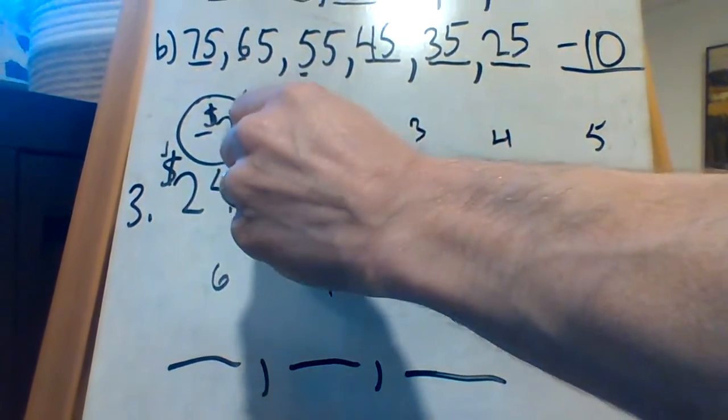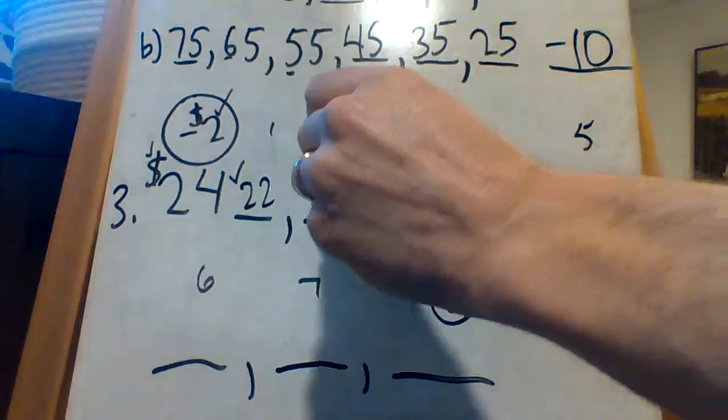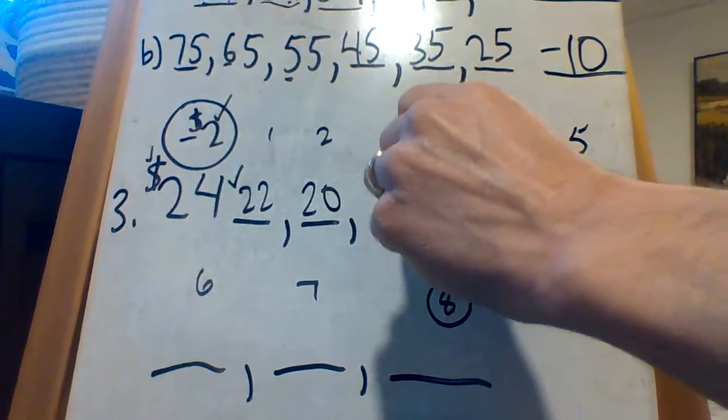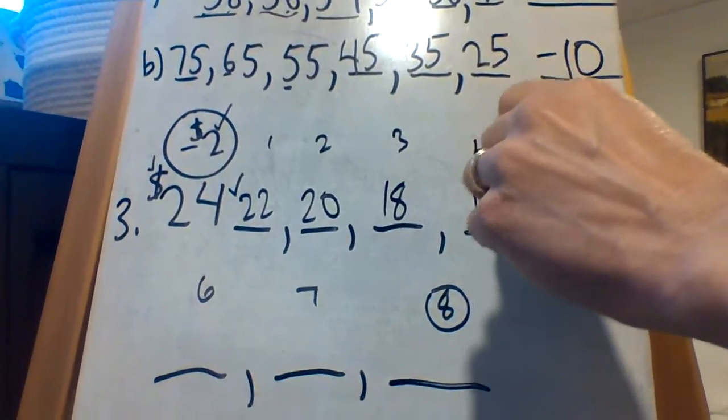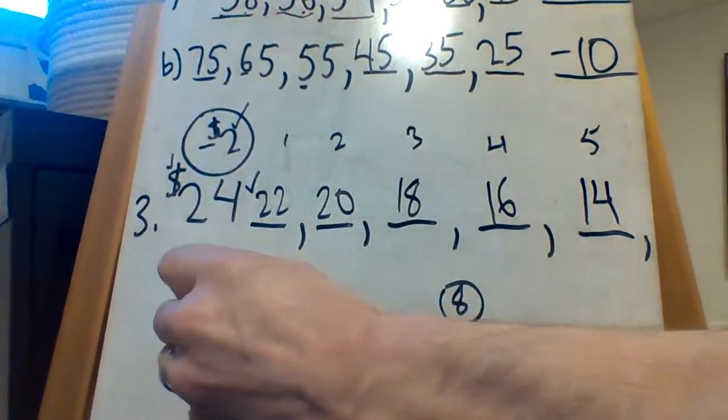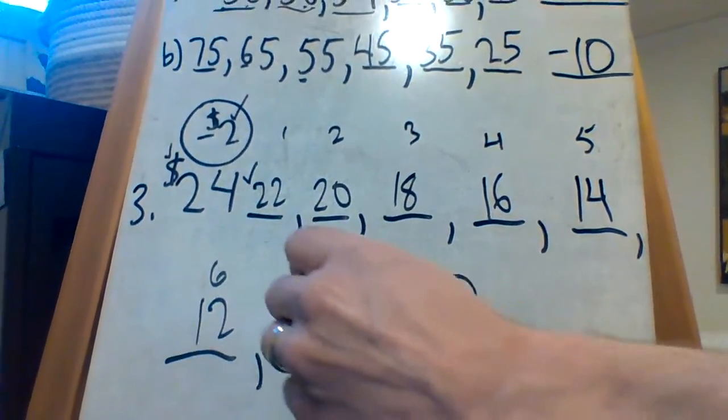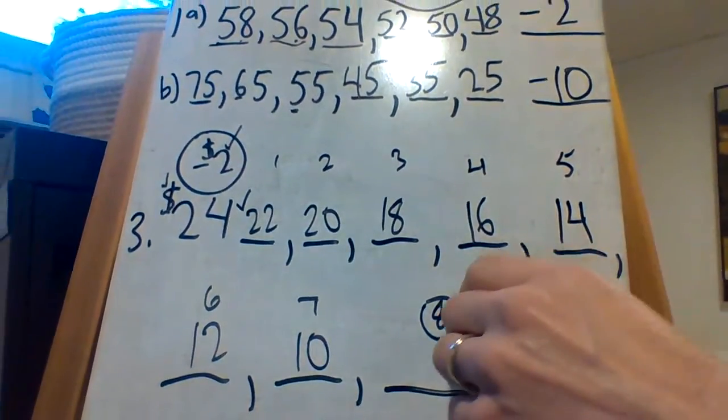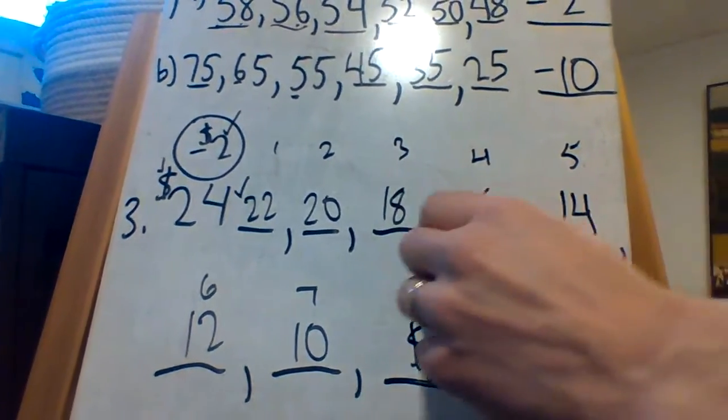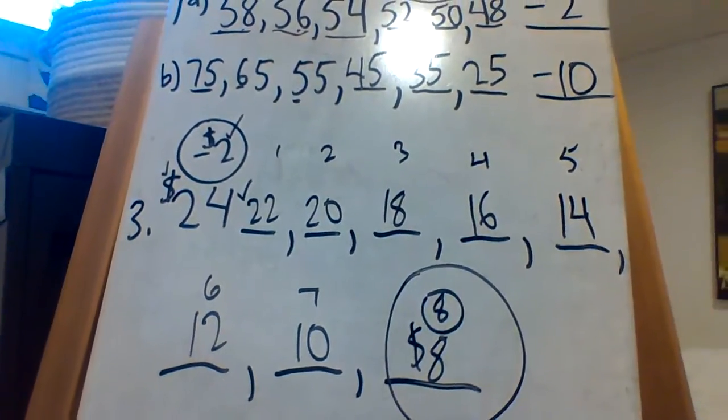24, 22, 20, 18, 16, 14... 12, 10... $8. He's going to have left on the 8th day.